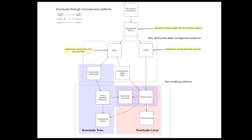The CQRS pattern is one of the key patterns for implementing queries that span services. It uses events to maintain a replica that's designed to support one or more queries. Eventuate makes it easy for you to use the distributed data management patterns in your microservices. It provides a framework that directly implements saga orchestration, and also provides the building blocks for the other distributed data management patterns.